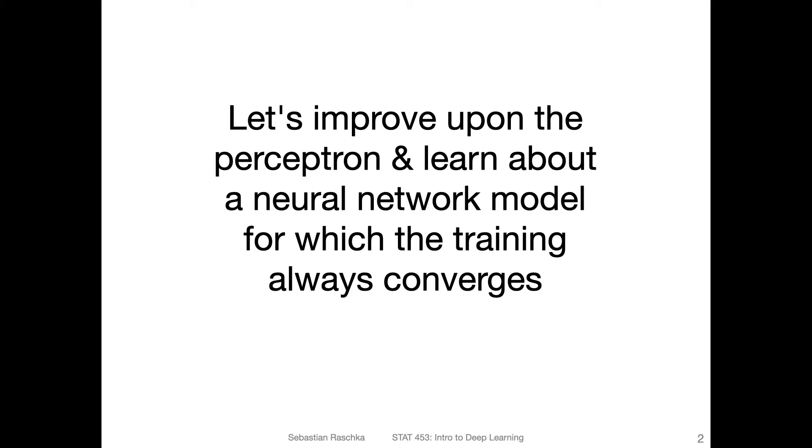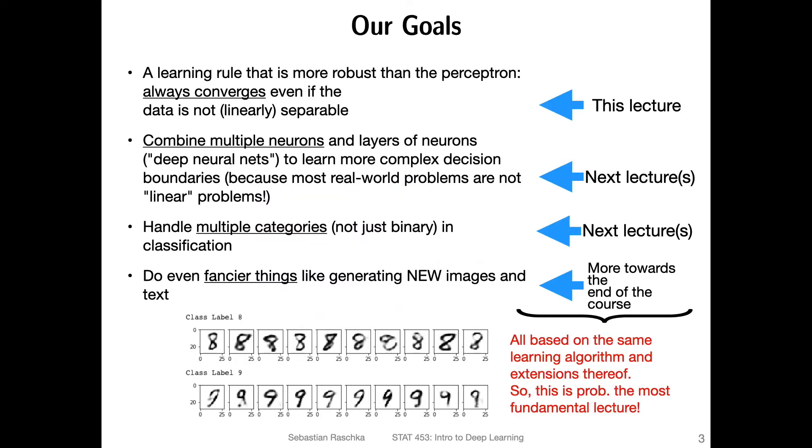So the goal here in this lecture is to improve upon the perceptron that we covered last week. In this lecture, we are going to learn about a neural network model for which the training always converges, even if the data is not linearly separable.